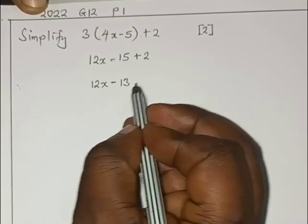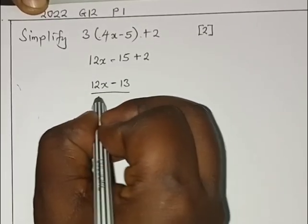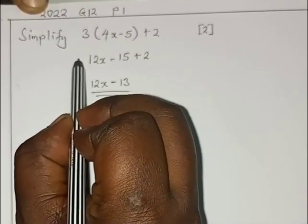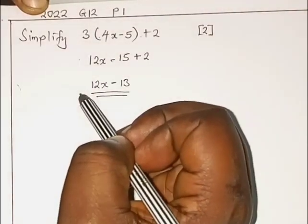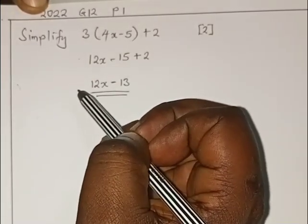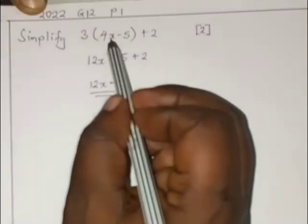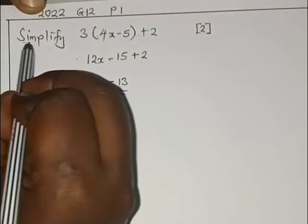At this point you cannot subtract this, they are not like terms, so this is the end. As you are doing your simplification, please do not add an equal sign here when marking. That is wrong, we will mark you wrong because this is not an equation, you are told to simplify.